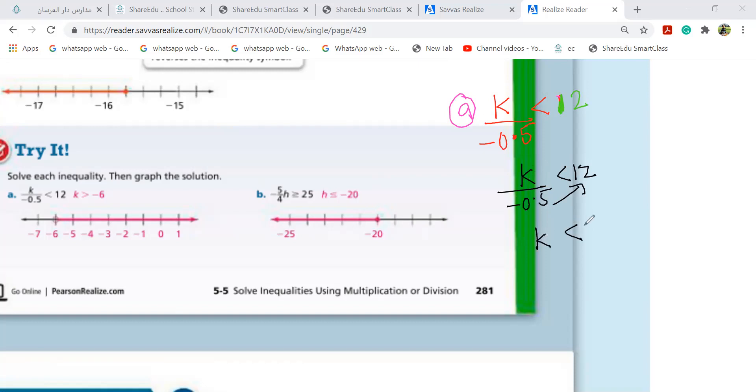Just write down K. Write down the greater than, sorry, less than, write down 12. I need to send this because K wants to be alone. It will go to another side. What will it become? Division will become? Multiplication? Yes. Very good.